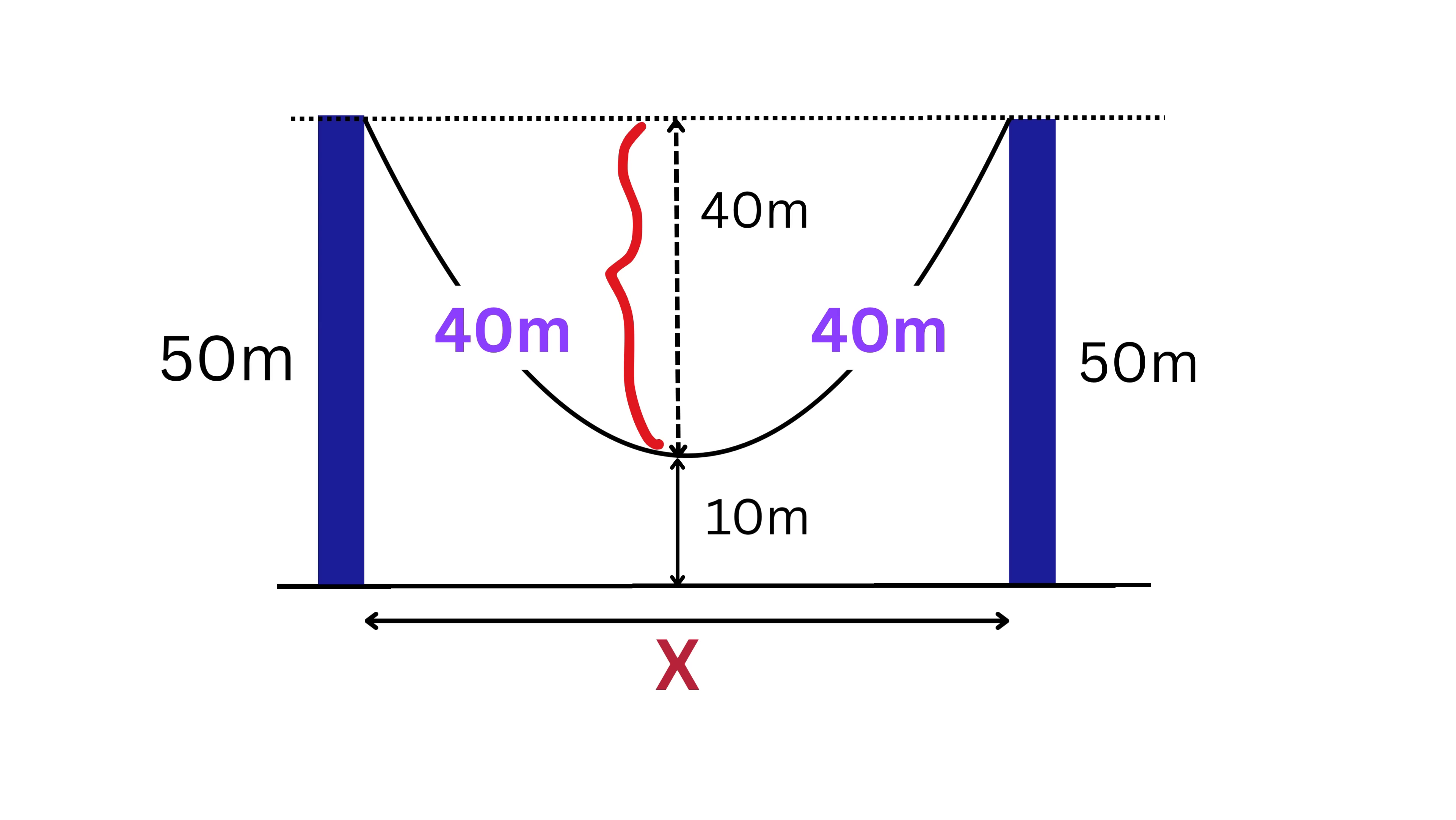40 meters from the top to the lowest point on this curve, plus 10 meters from the lowest point to the ground, adds up to 50 meters, which matches the height of the poles. You could analyze this from either side. It's symmetrical.